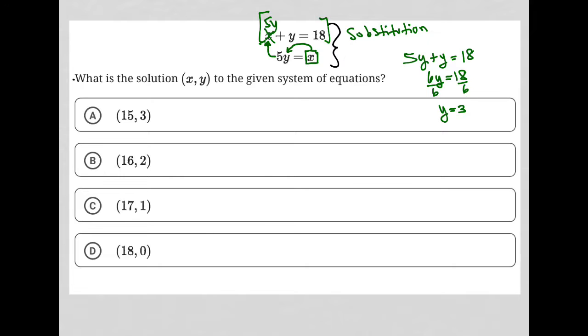I check over to my answer choices, and I see that A is the only option that has 3 in the y position, and therefore it must be correct. No need to also take the time to solve for x, because A is the only answer that has y equals 3.